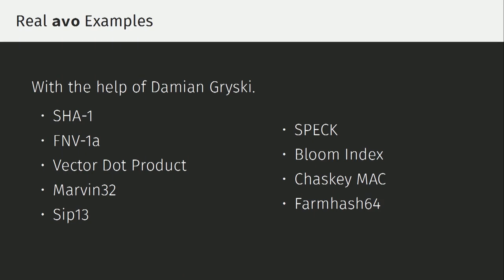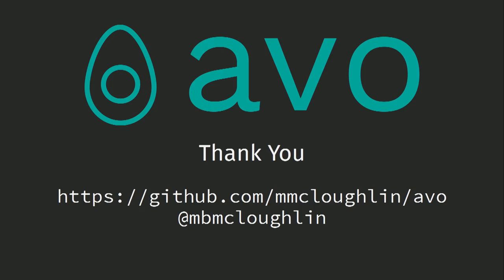AVO is still quite young, but there are already a number of real examples implemented with it. With the help of Damian Grieski, we already have a number of cryptographic primitives and hash functions. I hope that if you find yourself writing Go assembly, you'll consider using AVO to do it more safely and easily. Thank you.